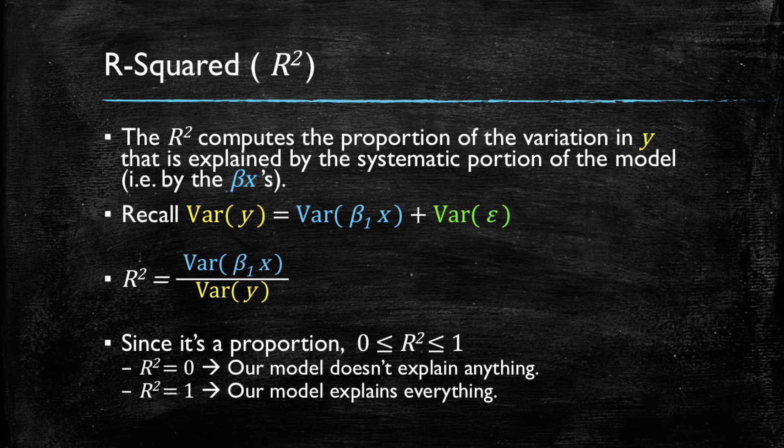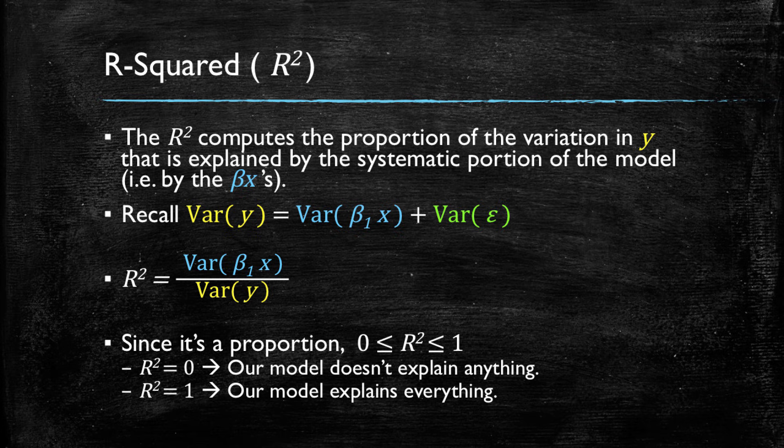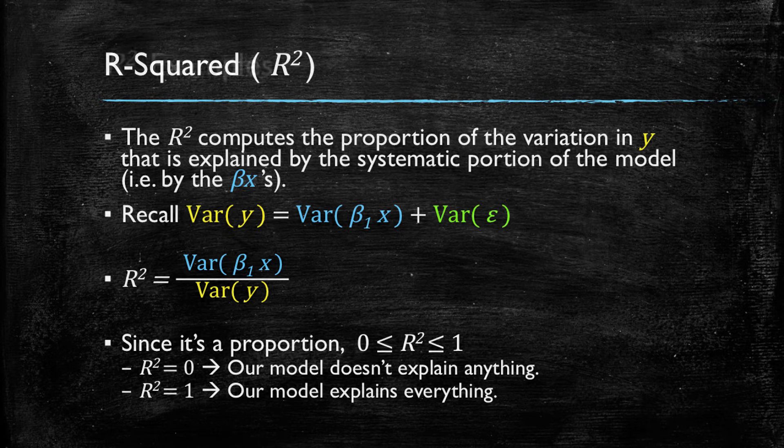And since this is a ratio, it's going to fluctuate between zero and one. Having a zero in this proportion means that our model is not explaining anything. The explained variance is nothing relative to the total variance. Meanwhile, if our R squared is one or at least close to one, this means our model is explaining everything. Now this might be better observed graphically.